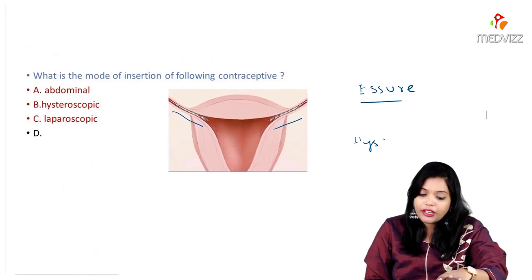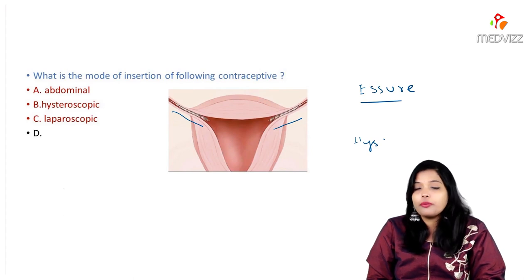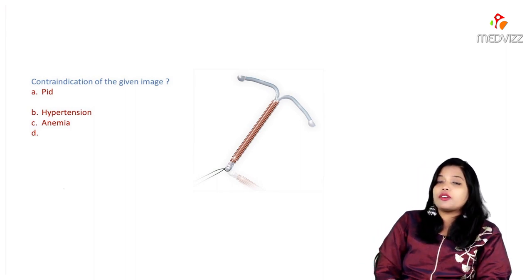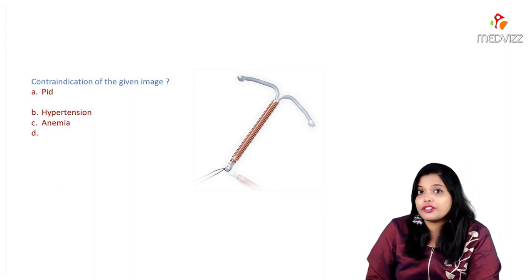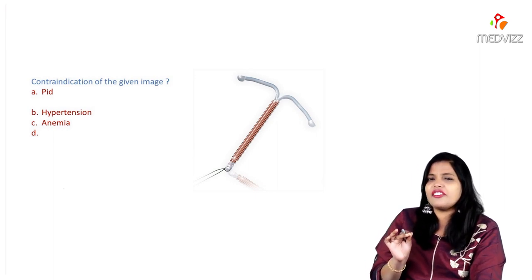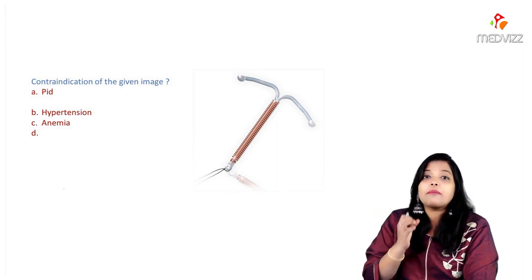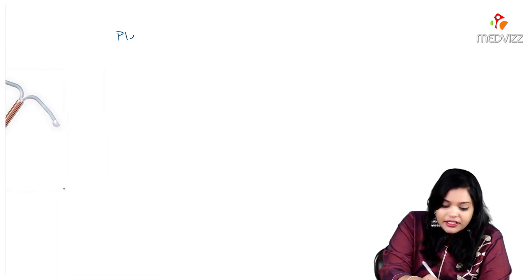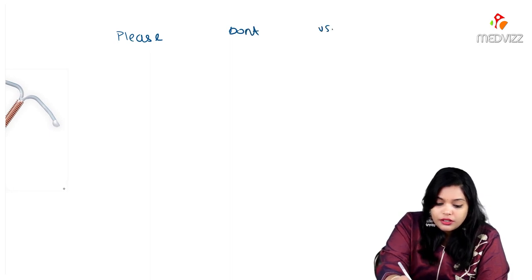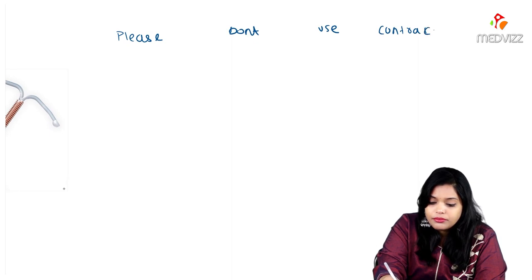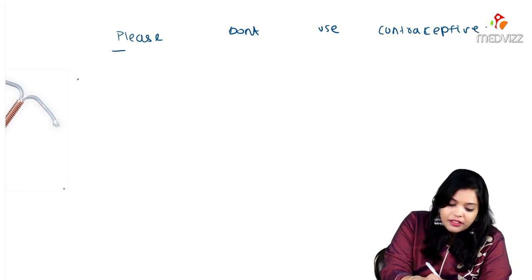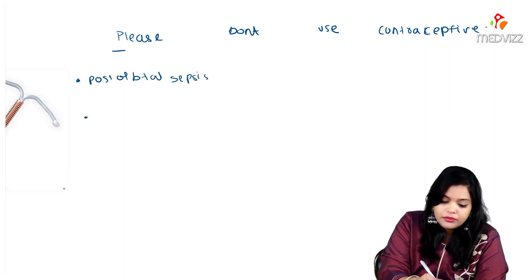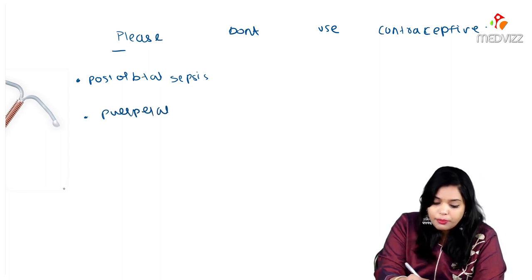The other image shows a copper T. What are the contraindications of copper T or any IUCD? Basic principle: if there is some problem inside the uterus, don't insert a foreign body. The mnemonic is PLEASE DON'T USE CONTRACEPTIVE: P stands for post-abortal sepsis or puerperal sepsis.